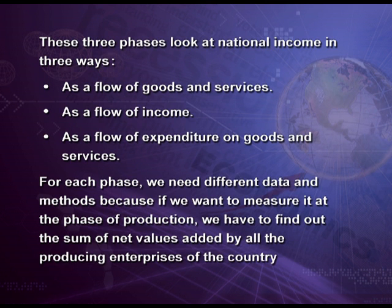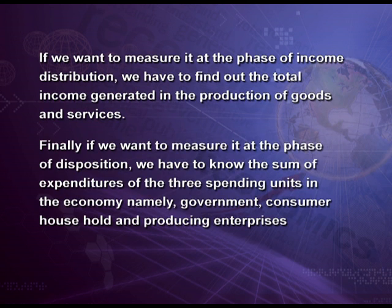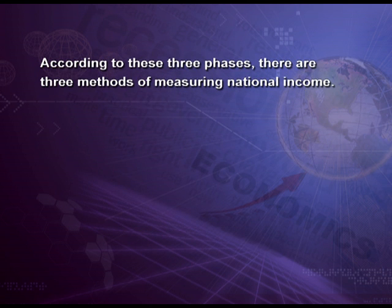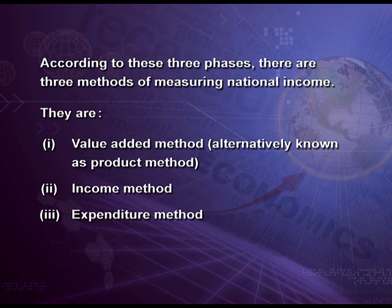For each phase we need different data and different methods. If we want to measure it at the phase of production, we have to find out the sum of net value added by all the producing enterprises of the country. If we want to measure it at the phase of income, we have to find out the total income generated in the production of goods and services. Finally, if we want to measure it at the phase of disposition, we have to know the sum of expenditure of the three spending units — namely government, consumer households, and producing enterprises. According to these three phases, there are three methods of measuring national income: value added method (also known as product method), income method, and expenditure method. Let us discuss first the value added method.